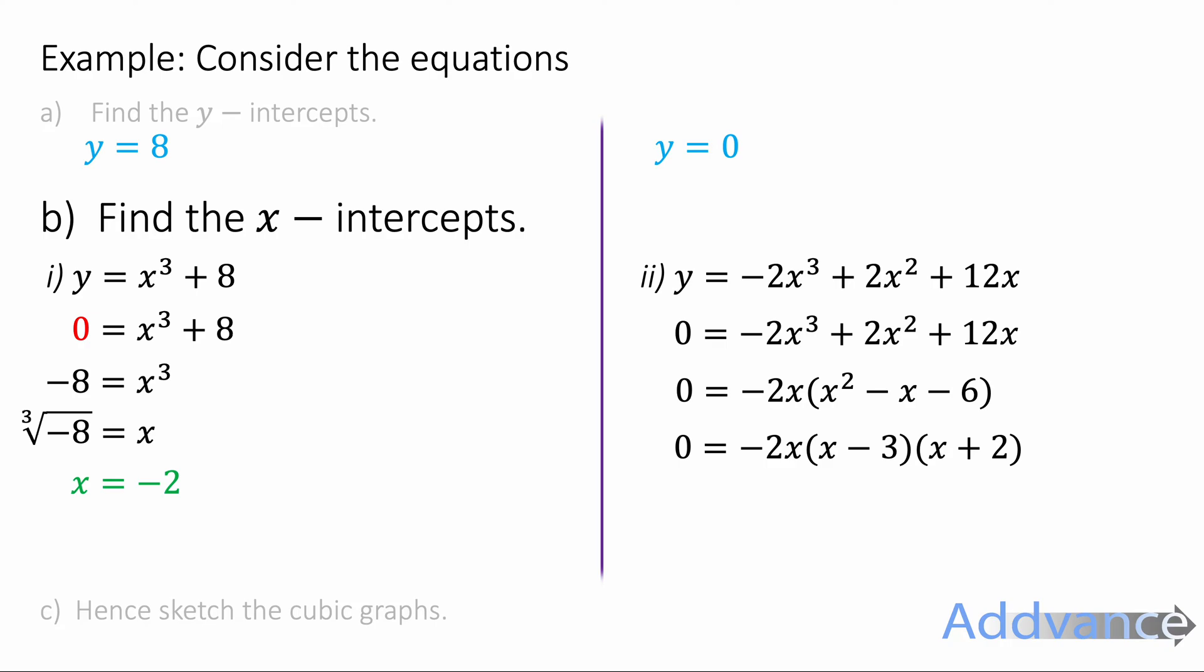We can now solve this equation. And this is three things multiplied together to make zero. So either any of those three things can be zero. Either the first part is zero: -2 × x = 0. x - 3 could be zero. Or x + 2 could be zero. If we solve each of those three equations, we get either x is 0, x = 3, or x = -2. And those are the three x-intercepts.